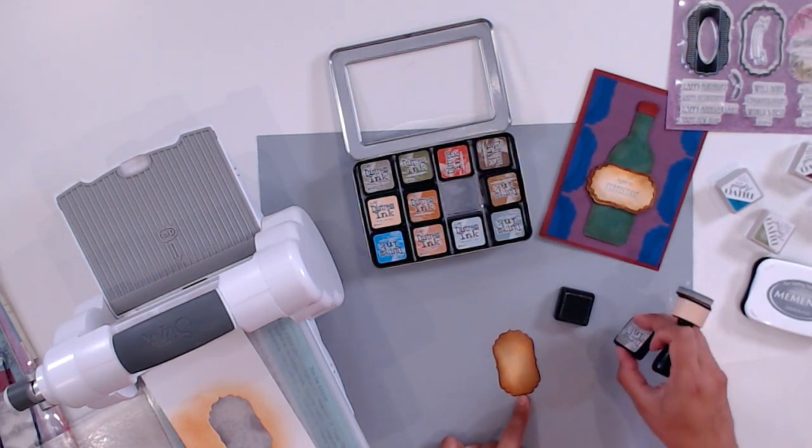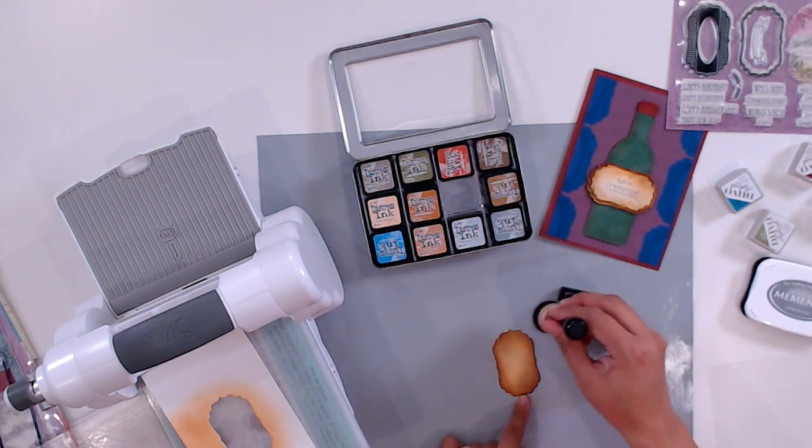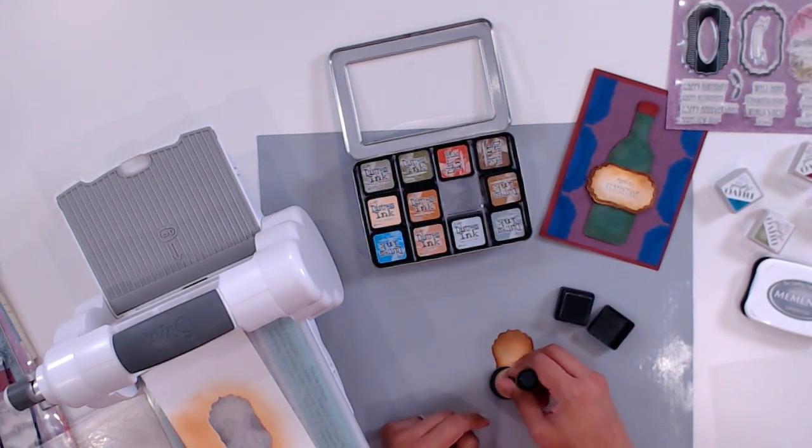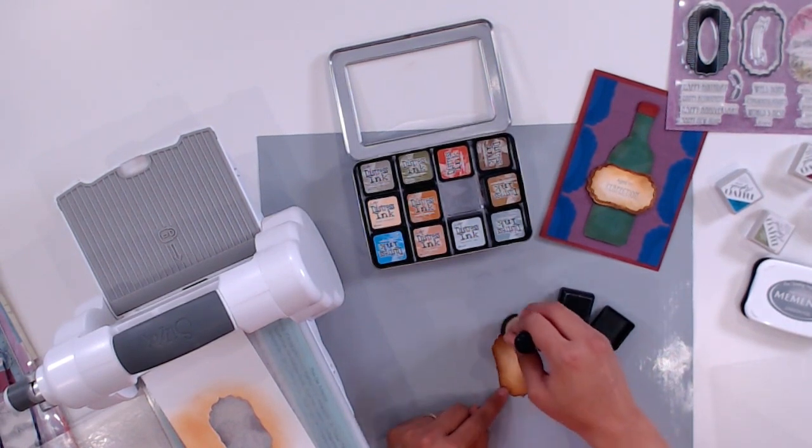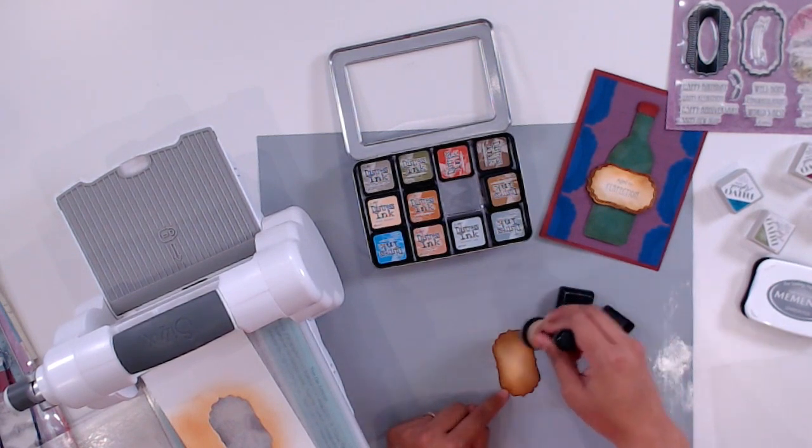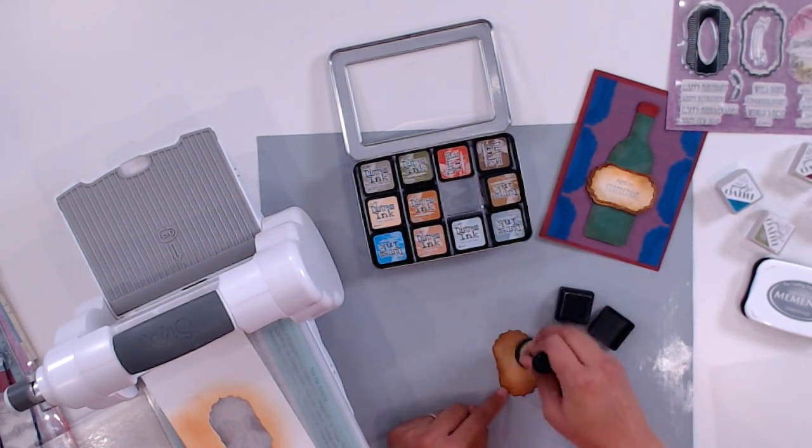Now that I've die cut my label, I can concentrate the Gathered Twigs distressing on the edges, just doing little circular motions around the edges of my die cut. I wanted to add a little bit of gray to my label. When you see aged paper, it has kind of a dusty tone to it. So I'm going to be using Pumice Stone and tapping it here and there throughout my label.